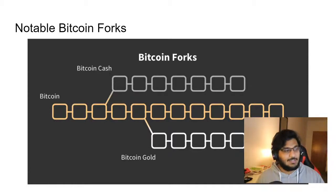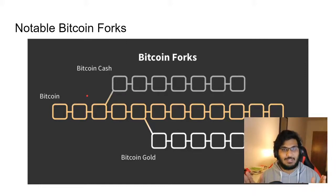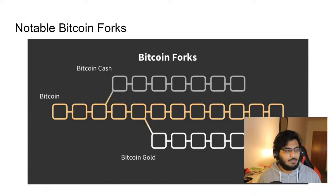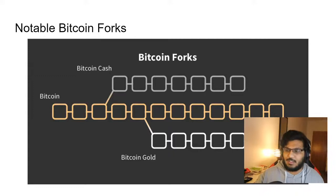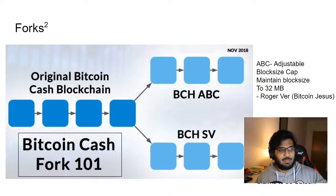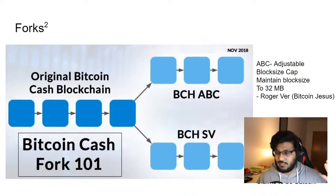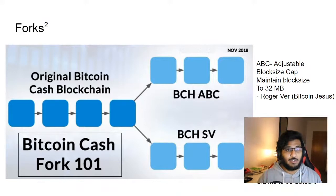Even though the coin splits, miners don't split automatically — after the split, a miner has to choose: do I support Bitcoin Cash or Bitcoin? The network with the most mining and hashing power will be the more positive network going forward. Bitcoin Cash kind of fell into obscurity; not many people talk about it anymore. In this case, the oldest legacy network is the one that stayed.